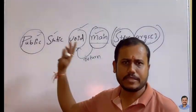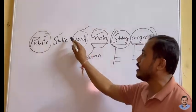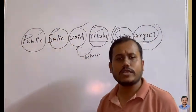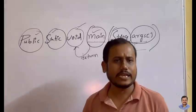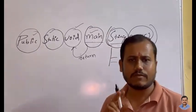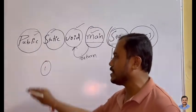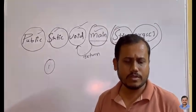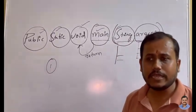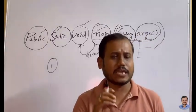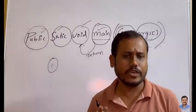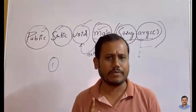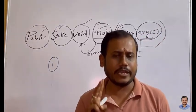Now why do we need to write static? Static plays a vital role in Java. Before understanding static, we need to understand two rules. The first rule: program execution starts from the main method. The second rule: in order to access any method in Java, we need to create an object. So rule one — execution starts from main; rule two — to access any method, you need to create an object.